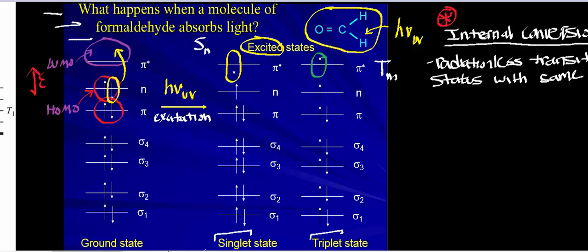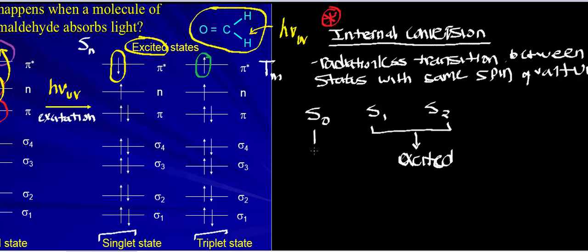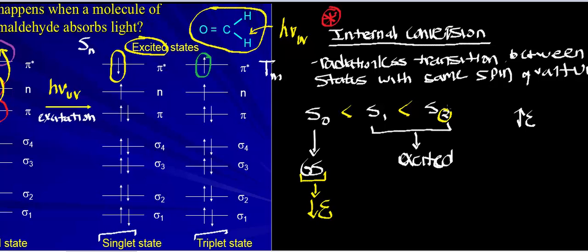I could have different singlet states: S sub 0, which turns out to be the ground state; S sub 1, which is one of the excited states; and S sub 2, which is also an excited state. So S sub 1 and S sub 2 represent excited states, whereas S sub 0 is the ground state. In terms of increasing energy, S sub 2 is the highest in energy, S sub 1 is intermediate, and S sub 0, the ground state, is the lowest. The ground state is always the lowest in energy, whereas as you increase this number, you go higher and higher in potential energy.